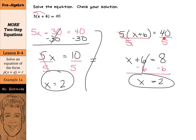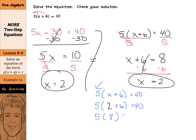We are asked to check our solution. When you start a check step, always start with the original equation: 5 times x plus 6 equals 40. x equals 2, so make your substitution: 5 times 2 plus 6 needs to equal 40. 5 times 8 needs to equal 40, and 40 equals 40, so our solution of x equals 2 is correct.